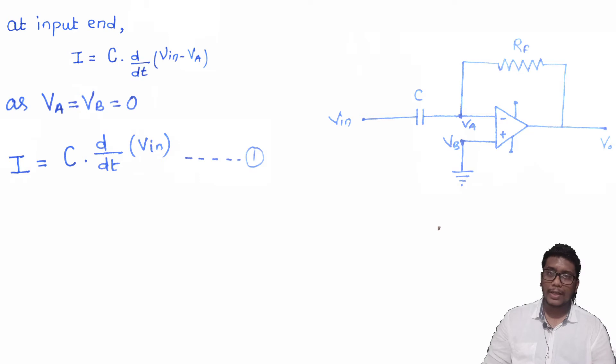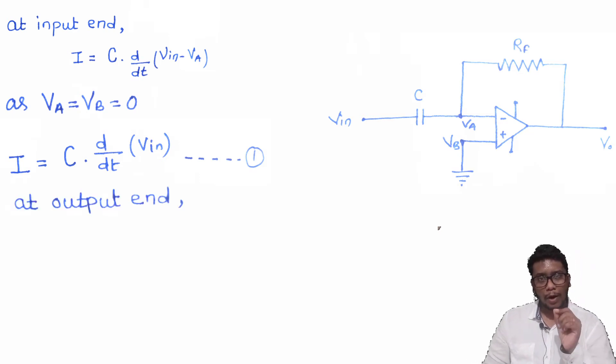Now, see the output end. At the output end, we are going to calculate from point VA to the V0.